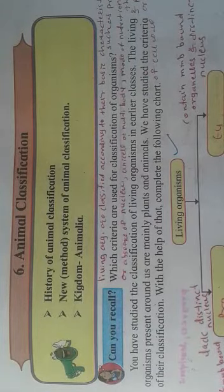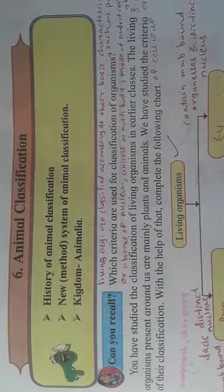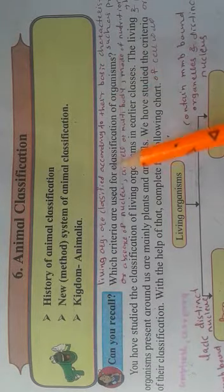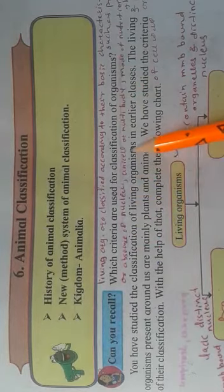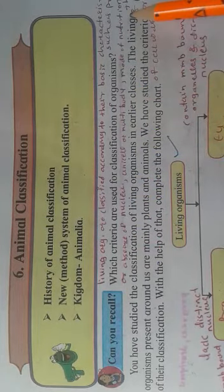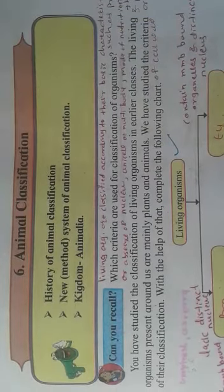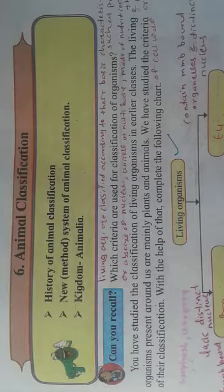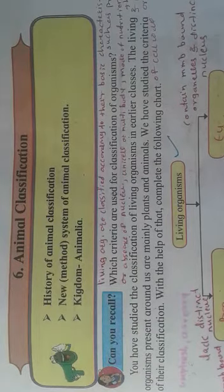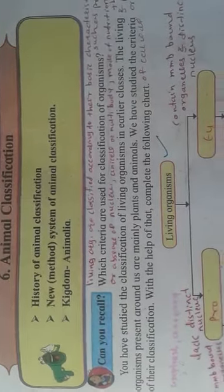Animals are classified according to their basic characteristics such as: presence or absence of nucleus, unicellular or multicellular body, mode of nutrition, and presence or absence of cell wall. These basic characteristics are used for the classification of animals. Now see this flow chart — here you can see that living organisms are classified into prokaryotes and eukaryotes.